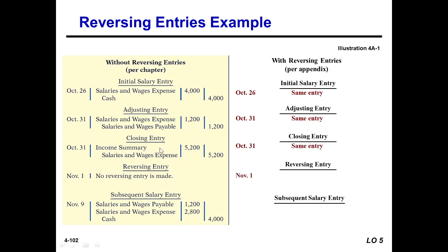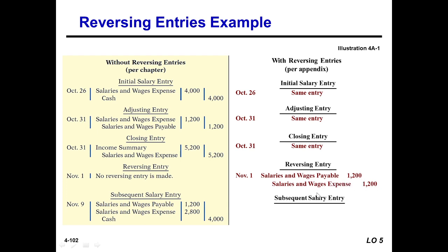The closing entry totals $4,000 plus $1,200, giving $5,200. Without reversing entries, no reversing entry is made. But with reversing entries, the reversing entry will be: debit salaries and wages payable and credit salaries and wages expense.